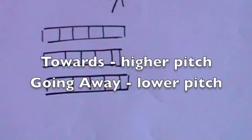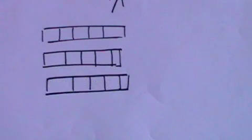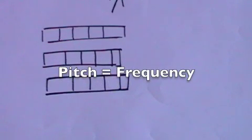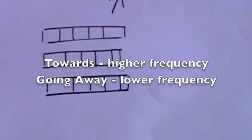The pitch changes depending on whether the car is coming towards you or going away. If it's coming towards, there's a higher pitch. If it's going away, there's a lower pitch. The pitch is determined by the frequency of the sound. It's a lower frequency if it's going away, and it's a higher frequency if it's coming towards you.